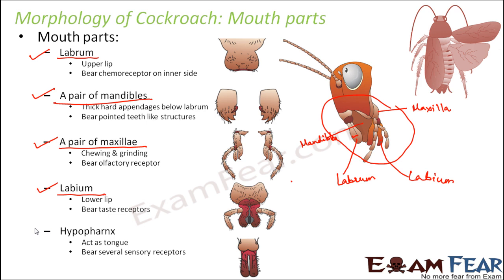The last mouth part is the hypopharynx. 'Hypo' means lower, and the pharynx is familiar as the structure that helps in swallowing in humans. Here it acts as a tongue and is analogous to the human tongue. It bears several sensory receptors. The hypopharynx is enclosed by all the other mouth parts and is located at the center, so it is not visible from the side view. Its appearance also resembles a tongue.